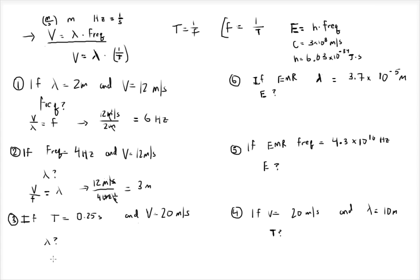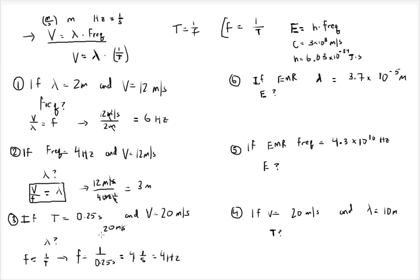We know that frequency is the inverse of period. So the frequency is 1 over 0.25 seconds, which gives us 4 inverse seconds — that is, 4 Hertz. Now we have it in frequency. Using the equation for wavelength — velocity divided by frequency — with a velocity of 20 meters per second divided by 4 Hertz, that leaves us with 5 meters.